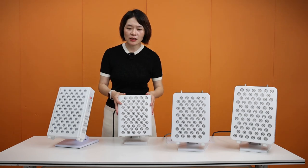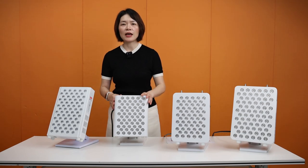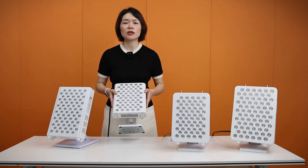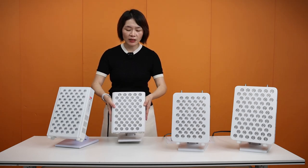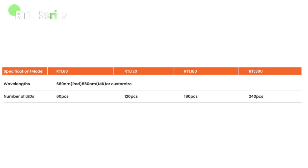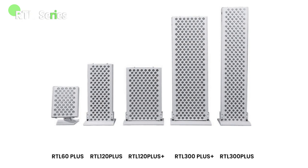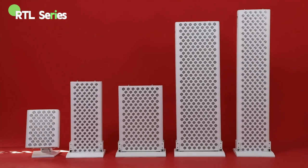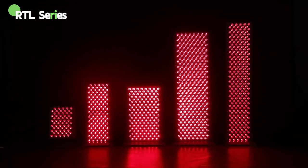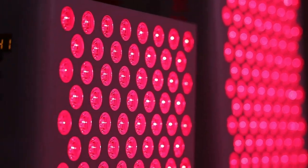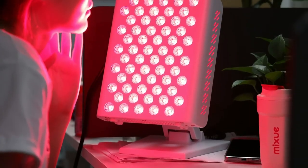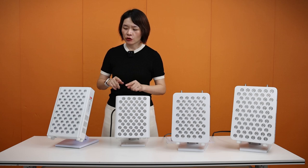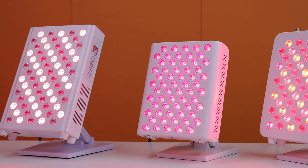This series was released with very simple functions and a very competitive price. This is the RTL60 — when released, we offered it at 65 USD. The RTL series also comes in several sizes: narrow and wide options. For customers concerned about EMF, if they worry that Bluetooth or Wi-Fi function adds extra EMF from the panel, they can select the TL Pro or RTL series.